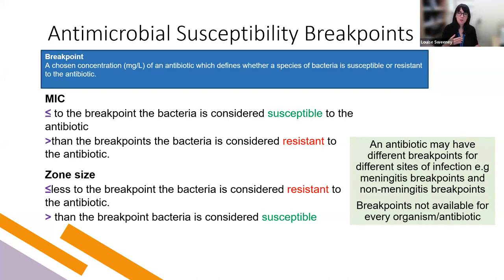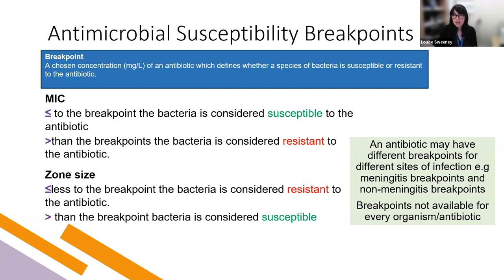Different antibiotics for different bugs — what we call the drug-bug combination — may have different breakpoints depending on the type of infection being treated. For example, meningitis compared to non-meningitis, because a key element in determining antimicrobial susceptibility is the penetration of the antibiotic to the site you're trying to reach. When breakpoints are put together, they are based on microbiological data, pharmacokinetic and pharmacodynamic data, and clinical study results. Not all bacteria or drug-bug combinations will have breakpoints, and in those situations decisions are often based on clinical experience of using a certain antibiotic in the treatment of a certain infection.